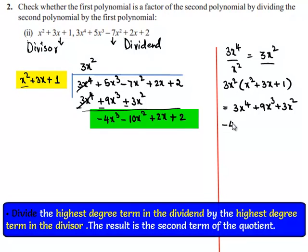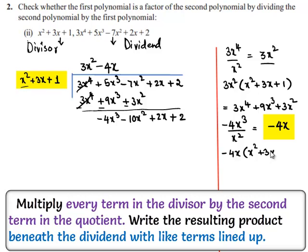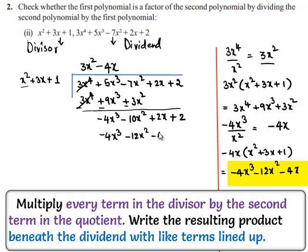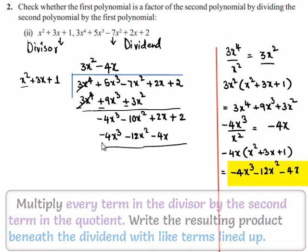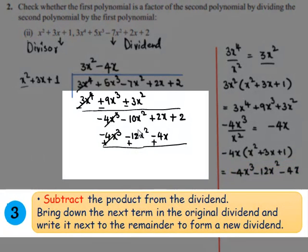The new dividend has the highest degree term as minus 4x cubed and the divisor has the highest term as x squared. On dividing them, we get minus 4x, so it can be written at the place of the quotient. Now minus 4x multiplied by the divisor, which is x squared plus 3x plus 1, gives minus 4x cubed minus 12x squared minus 4x. This product can be written here. Now on subtracting, minus 4x cubed and plus 4x cubed will be cancelled.